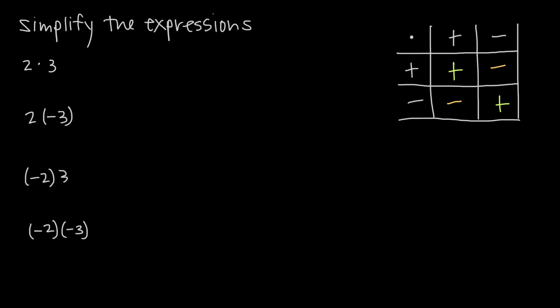In this video, we're talking about multiplication of signed numbers. When we say signed numbers, we're just talking about numbers with either a positive sign or a negative sign attached. For example, in this expression we have here, 2 is a positive number and 3 is a negative number with the negative sign in front.